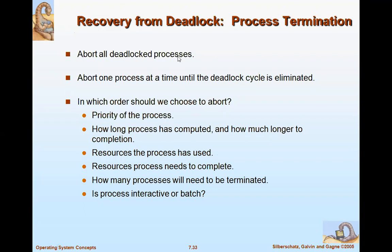That means you stop the processes automatically. You can abort one process at a time until the deadlock cycle is eliminated. You try to select the processes which have entered into the deadlock state and take them one by one, aborting them until the cycle formed as a deadlock is eliminated.